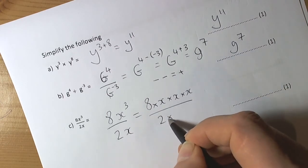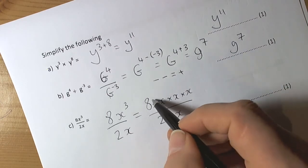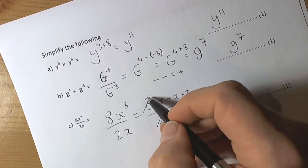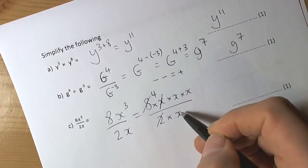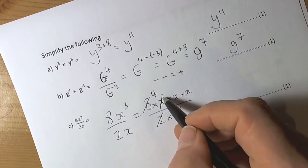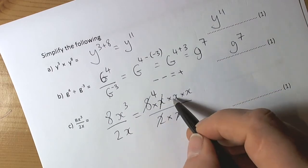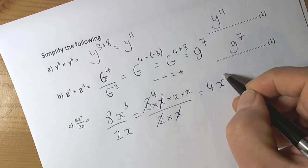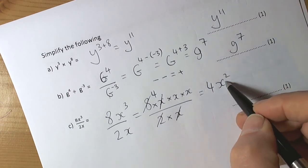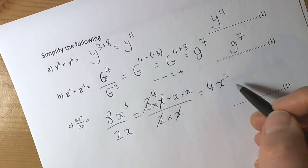and 2x means 2 times x. So we can see here that the 8 divides by the 2 to give us 4, and x divided by x is 1, so they cancel to become 4 times 1, which is just 4 still. And we've still got an x and x left, so this becomes 4x squared. x times x is x squared, 4 was left from doing the 8 divided by 2, so 4x squared.